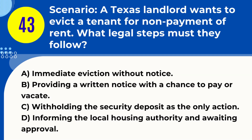Question 43. Scenario: A Texas landlord wants to evict a tenant for non-payment of rent. What legal steps must they follow? A. Immediate eviction without notice. B. Providing a written notice with a chance to pay or vacate. C. Withholding the security deposit as the only action. D. Informing the local housing authority and awaiting approval. Answer: B. Providing a written notice with a chance to pay or vacate. Explanation: In Texas, a landlord must provide a tenant with a written notice to vacate, giving them the opportunity to pay the overdue rent or vacate the property before proceeding with an eviction lawsuit.